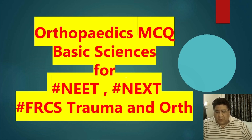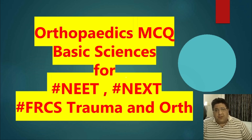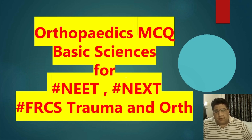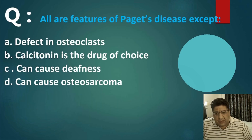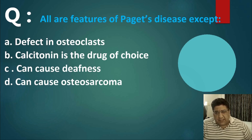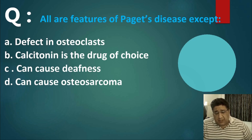Hello everyone, I'm Dr. Tushar Mehta, orthopedic surgeon and your faculty of orthopedics. Today I'm going to have a long discussion about a particular topic. Let's first take an MCQ: all are features of Paget's disease except — A) defect in osteoclast, B) calcitonin is the drug of choice, C) can cause deafness, D) can cause osteosarcoma.